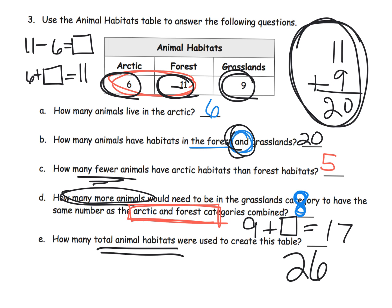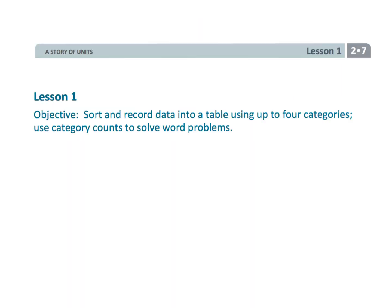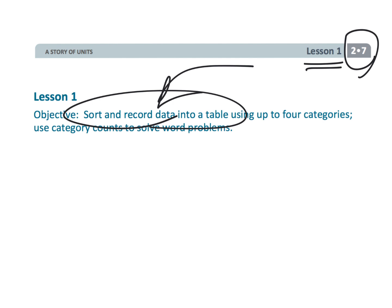That wraps up second grade module 7 lesson 1, where students are sorting and recording data. Parents and teachers, allow your students plenty of opportunities to talk about how they got their answers — sometimes they'll use subtraction, sometimes addition, and it's always worthwhile. Also consider allowing your students to come up with their own items and categories.